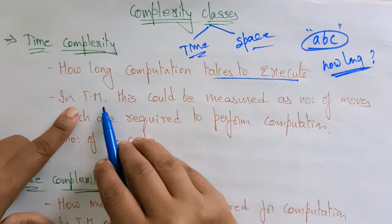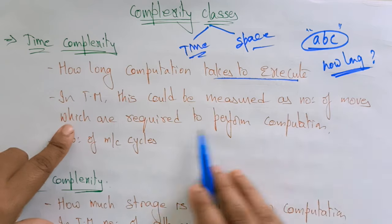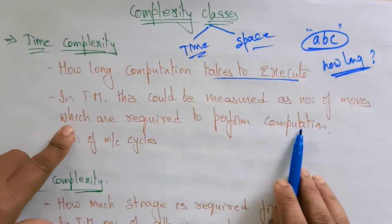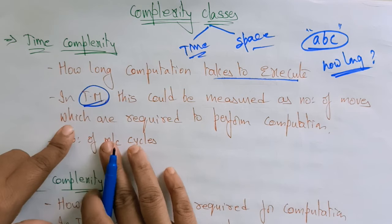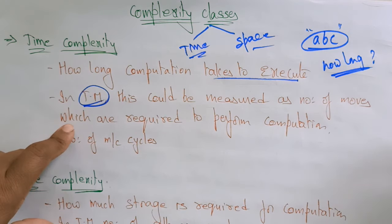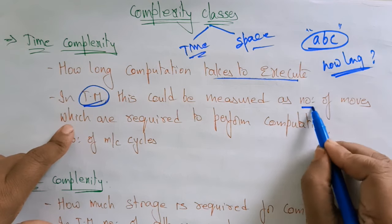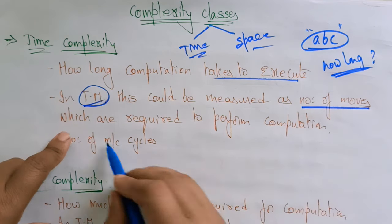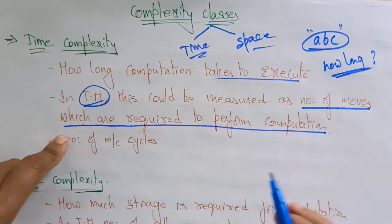In a Turing machine, time complexity could be measured as the number of moves which are required to perform a computation. So in the Turing machine, how you decide the time complexity — it is completely based on the number of moves which are required to perform the computation.